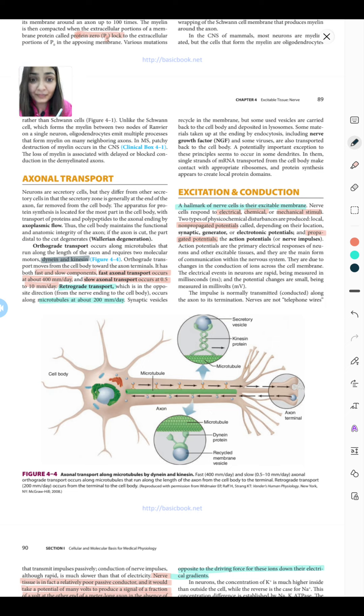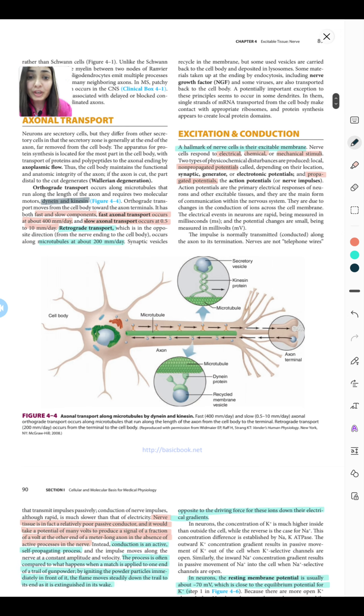Now coming to excitation and conduction: the structure is called excitable tissue nerve, so we know the hallmark of nerve cells is that it has an excitable membrane and responds to various electrical, chemical, and mechanical stimuli. There are two types of physical-chemical disturbances: one is local and not propagated—these are called synaptic, generator, or tonic potentials. The second type is propagated potential, transferred along the nerve—these are known as action potentials or nerve impulses.